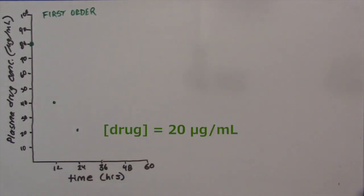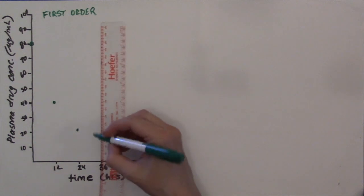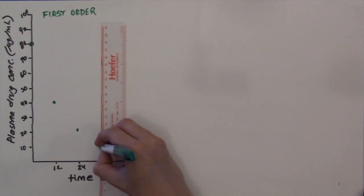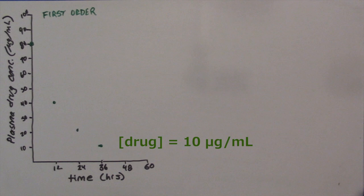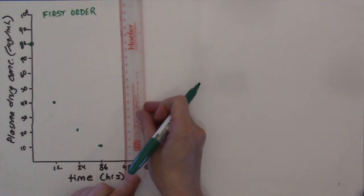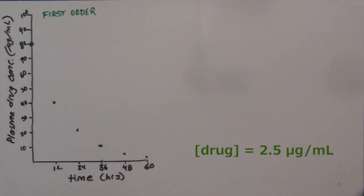The blood level is one quarter what it was when the dose was first administered. After another 12 hours — three half-lives — the blood level has dropped to 10 micrograms per milliliter, one-eighth of the original. At 48 hours, it's down to 5 micrograms per milliliter. And by 60 hours, or five half-lives, it's down to 2.5 micrograms per milliliter — about 3% of what it was at the beginning.